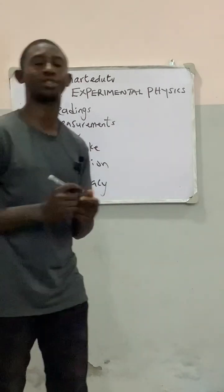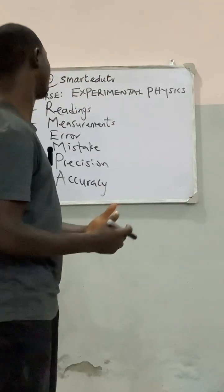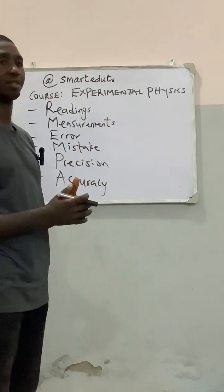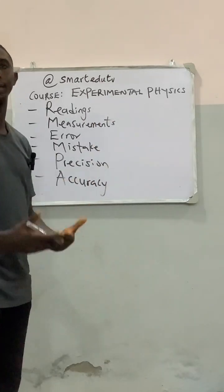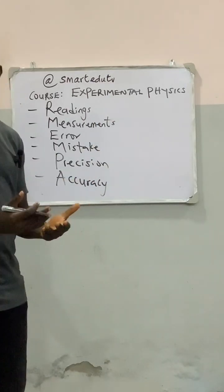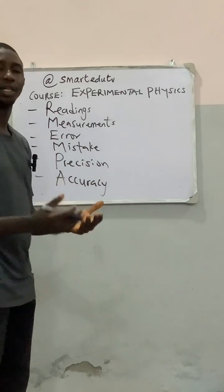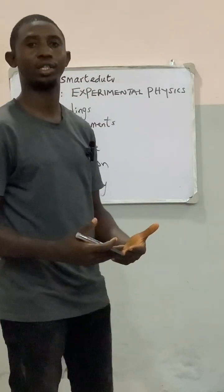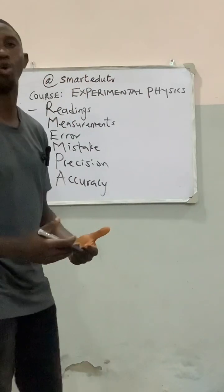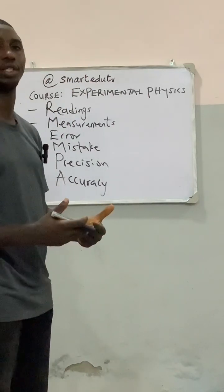So these are some of the times we are going to encounter in experimental physics. Let's start with the first one, readings. What do we mean by reading? A reading is simply a single determination of the value of an unknown quantity.